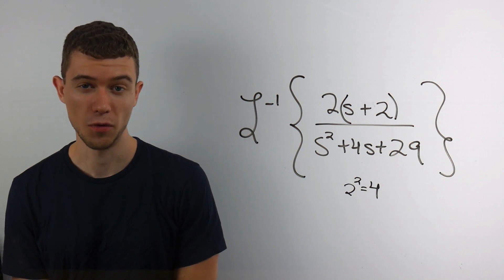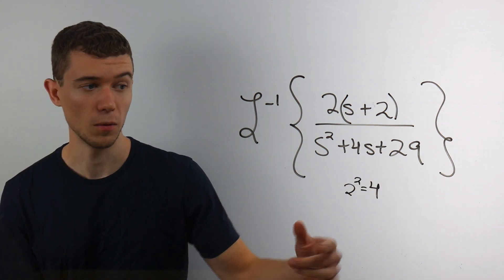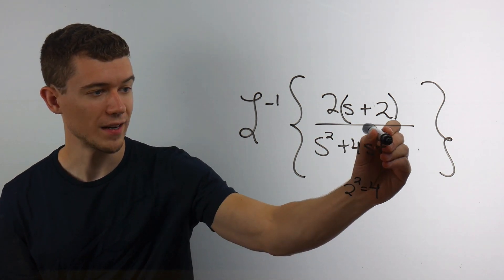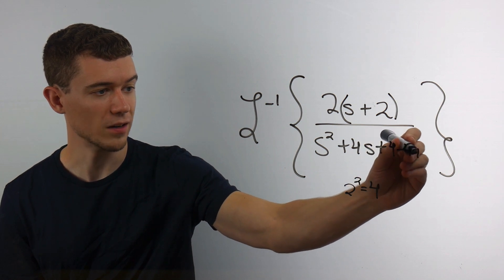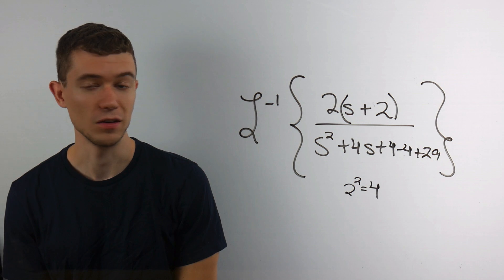And we add and subtract 4 in the bottom. Essentially we're adding by 0. So I do it in a particular way. Right in here, I do plus 4 minus 4. I insert it in between the second and third terms.